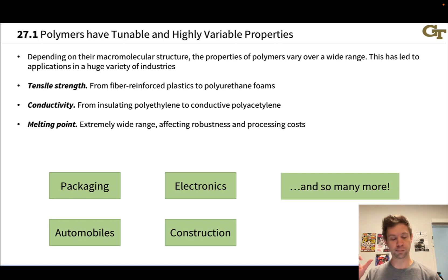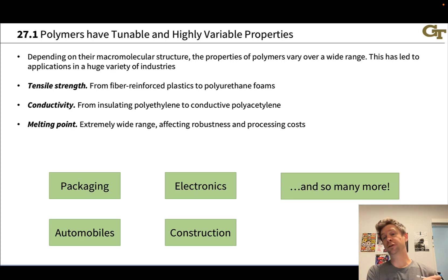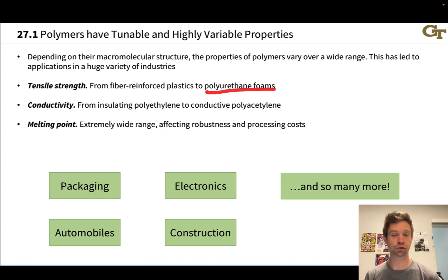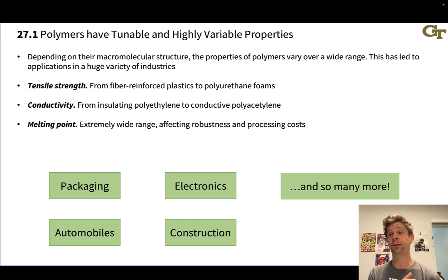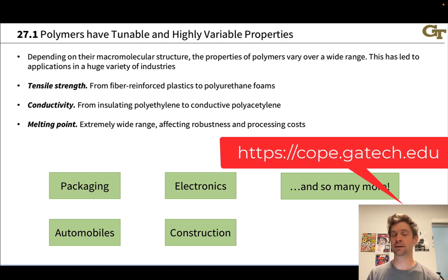This slide focuses on properties of polymers that we tend to care about. Tensile strength can span a huge range — from very soft polyurethane foams used in shoe soles to fiber-reinforced plastics that are very tough. Conductivity: many polymers are electrically insulating, but there are polymers that are conductive, such as polyacetylenes, which have very long conjugated systems of hundreds of atoms and can conduct electricity or at least be semiconducting — an important area of active research, particularly at Georgia Tech with the Center for Organic Photonics and Electronics.